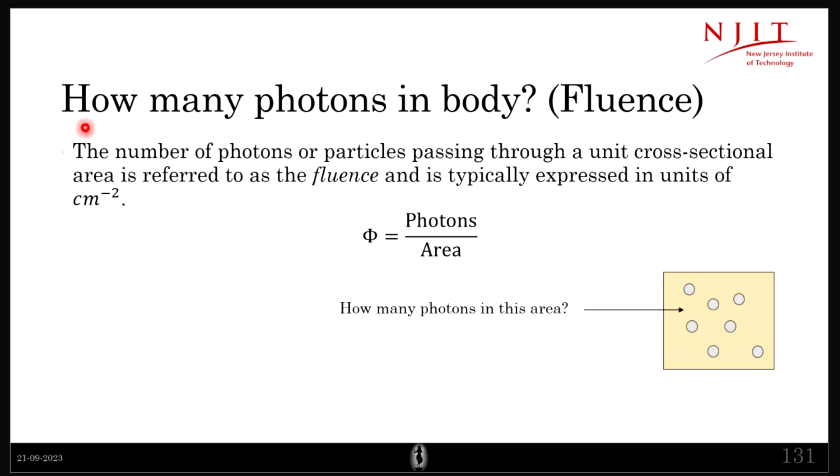How many photons are there in the body? That is characterized by fluence. Fluence is the number of photons or particles passing through a unit cross-sectional area, given by the formula Φ equals number of photons per unit area. Let's say this is a tissue - at a particular time, how many photons are there? That is fluence.